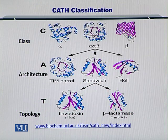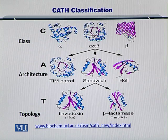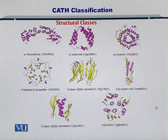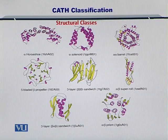From this figure, it is clear that the highest level of organization is the topology, followed by architecture, and below that is the class or the domain. The different structural classes are shown here for reference.